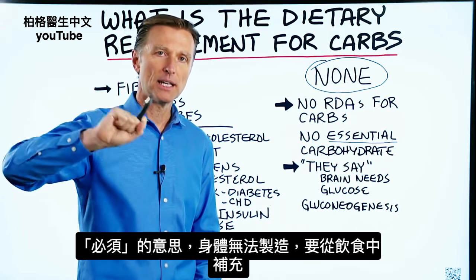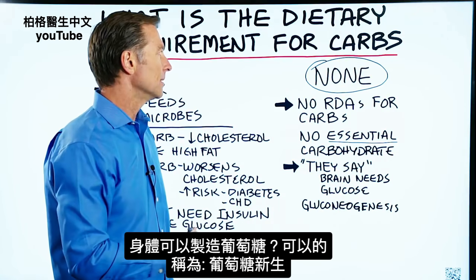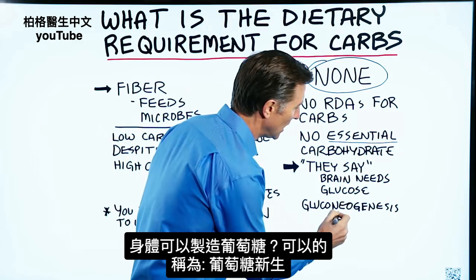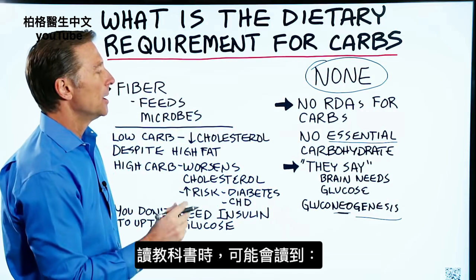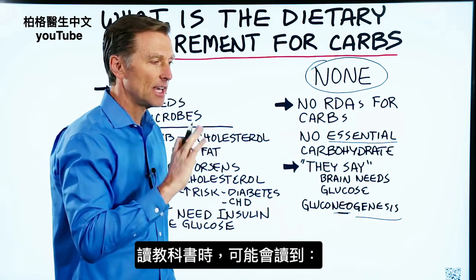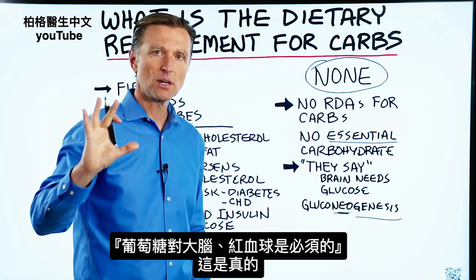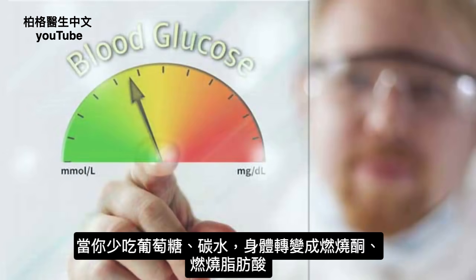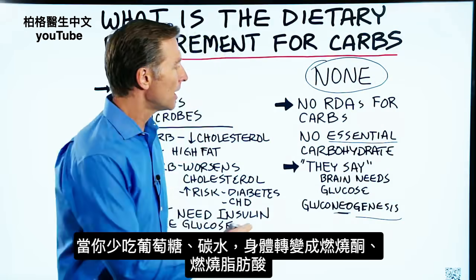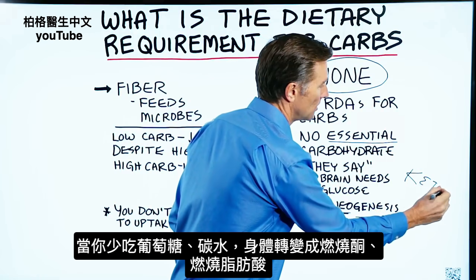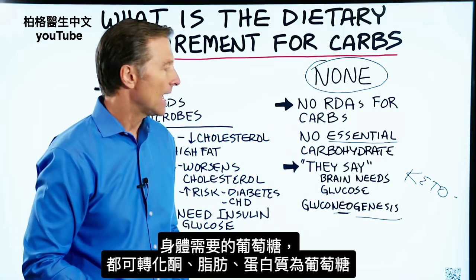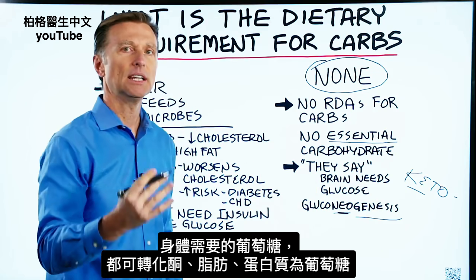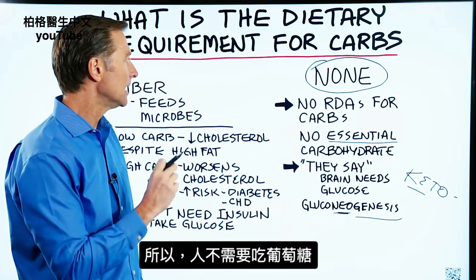It needs to get it from the diet. Well, guess what? The question is, can your body make glucose? Yes. It's called gluconeogenesis. But when you read textbooks sometimes, they'll even say glucose is necessary for the brain, for the red blood cell — and that's all true. But when you actually reduce glucose and cut down the carbs, your body just converts and starts burning ketones, starts burning more fatty acids. And any glucose that it needs, it can turn the fat or protein into glucose. So you do not need glucose.